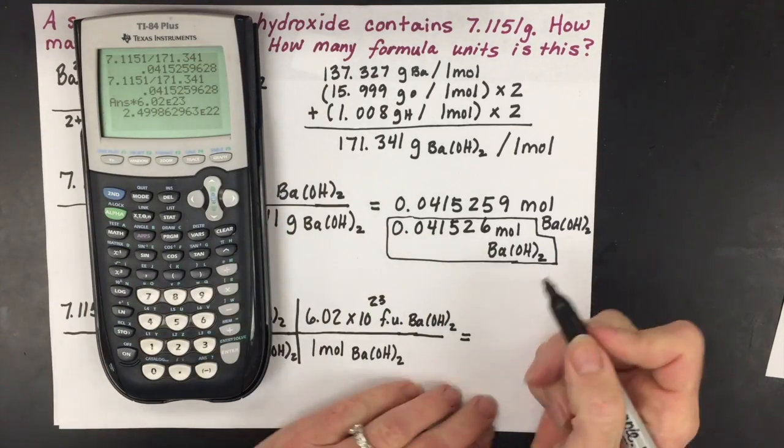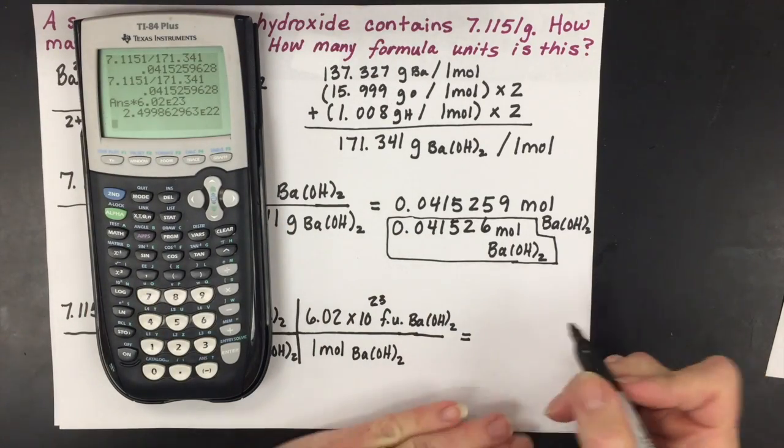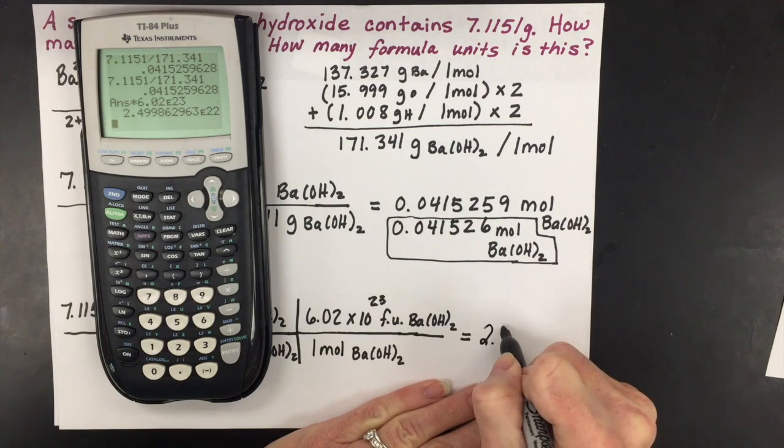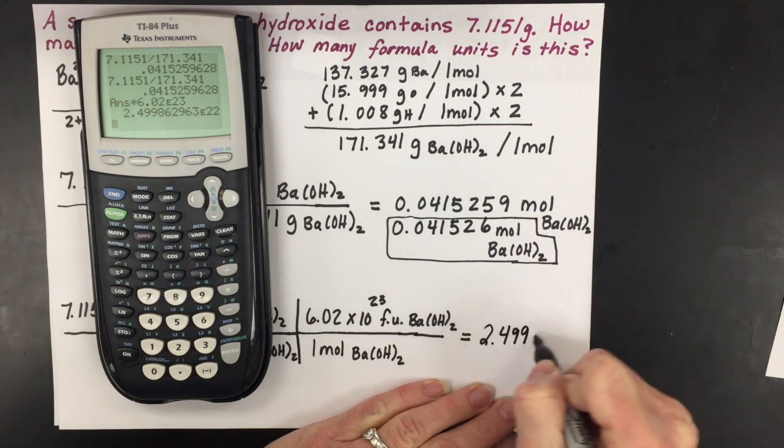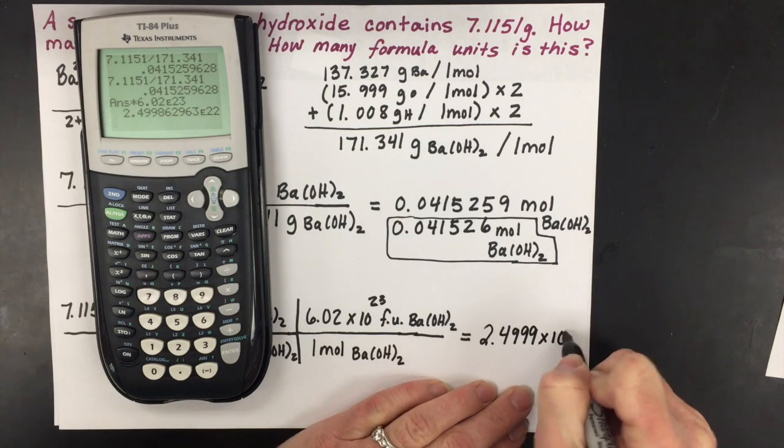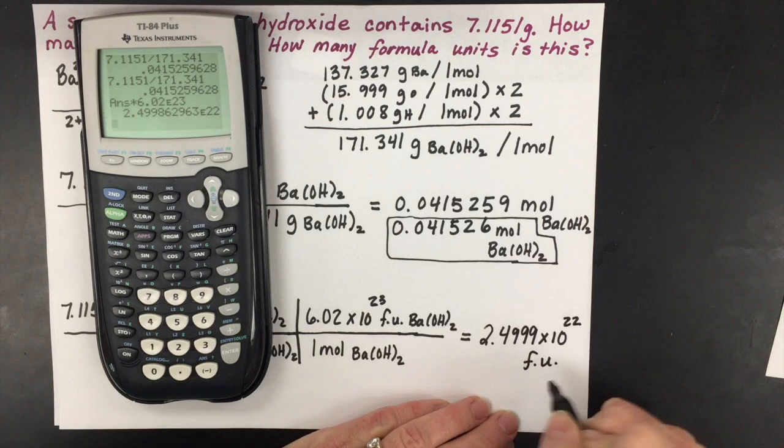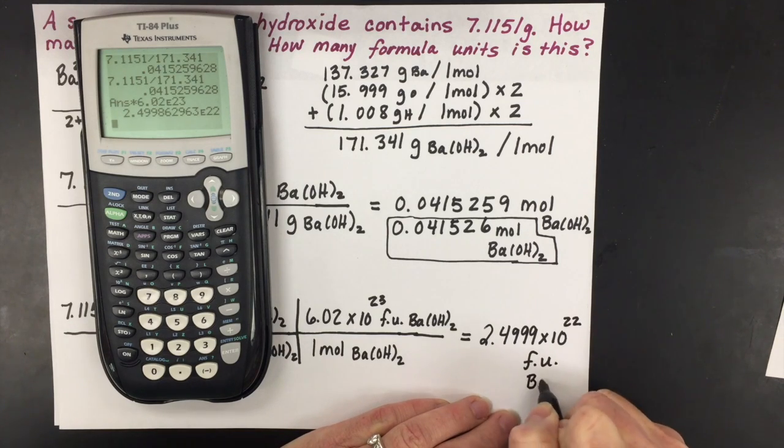We get a fairly sizable answer with lots of significant figures, but I can only keep five. So it ends up being 2.4999 × 10²² formula units, and then my label is barium hydroxide.